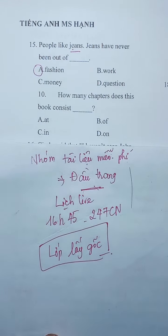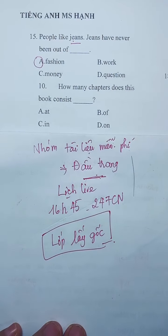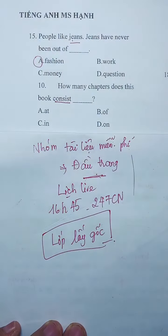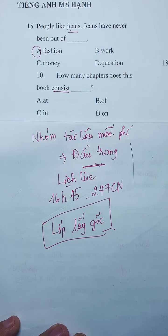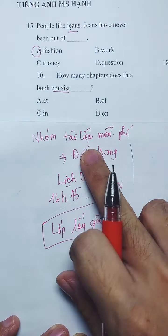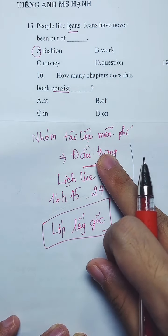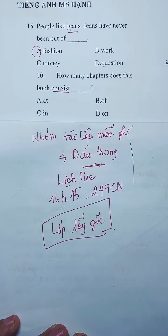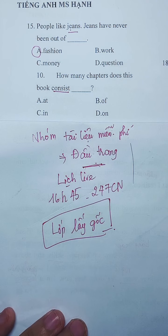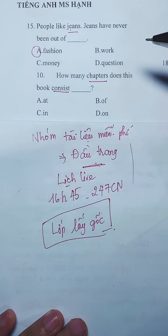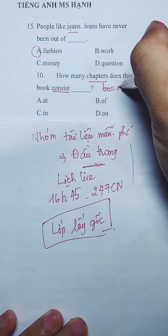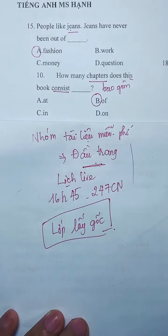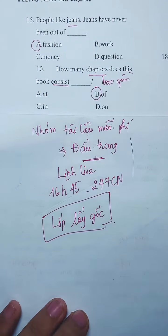Câu 16 về giới từ đi với từ 'consist'. Quyển sách này bao gồm bao nhiêu chương? 'Chapters' là chương. Từ 'consist' sẽ đi với 'of' - cụm 'consist of'.